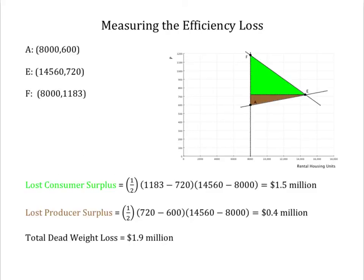The deadweight loss resulting from imposing the price controls is just the area of the triangle connecting our points A, E, and F, which is a total of about $1.9 million under the best of circumstances. $1.5 million in lost consumer surplus, and $0.4 million in lost producer surplus.